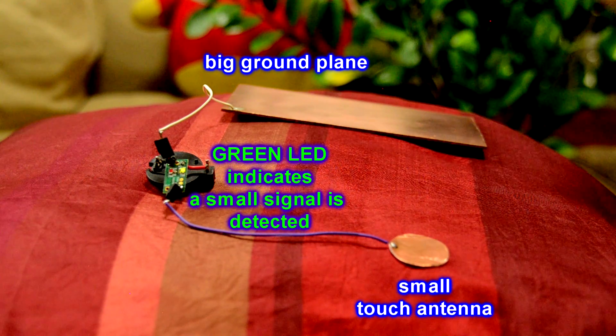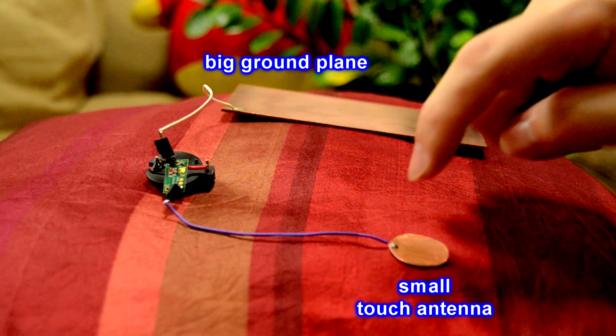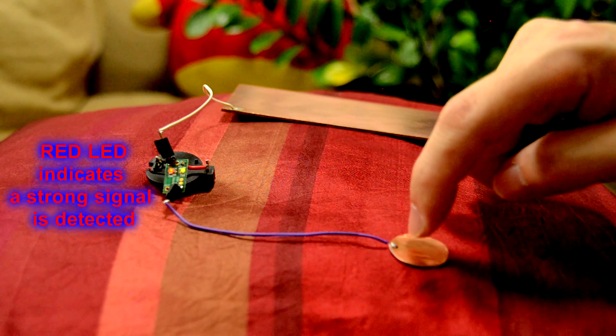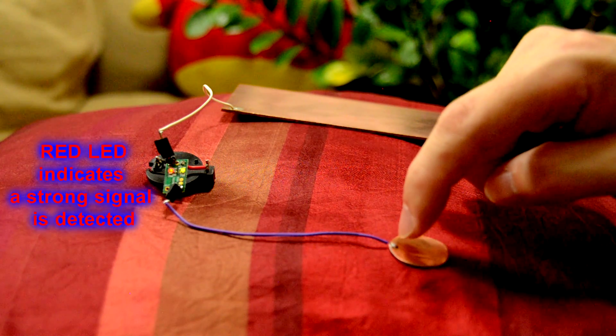So by having a large ground plane, which is one of the antennas, the sensitivity automatically goes to the smaller antenna, which is meant to be the touch focus point.